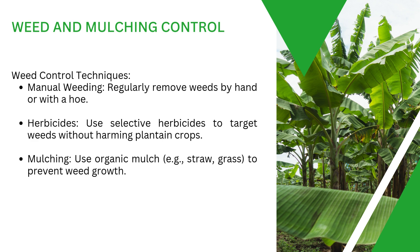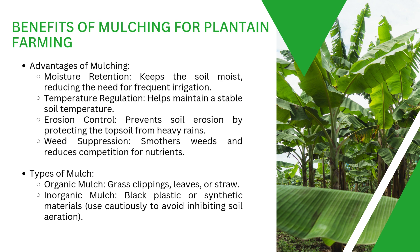After fertilization, the next topic is weed and mulching. Always remove weeds — use your hands or a hoe. Use herbicides only when a weed is seriously harming your crop; manual weeding is always preferable. Alternatively, consider mulching: use organic materials like straw and grass to prevent weed growth by covering the ground so weeds cannot establish.